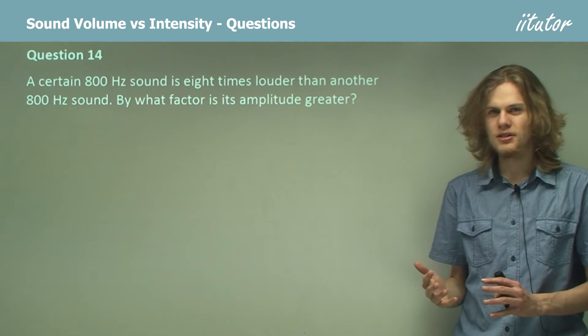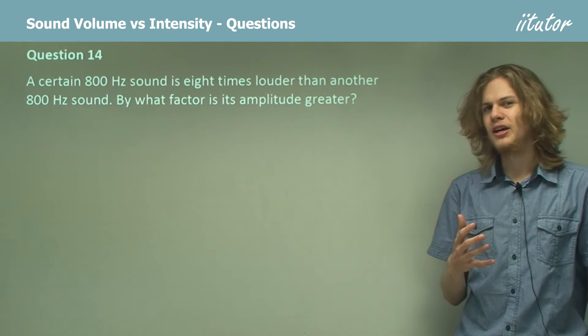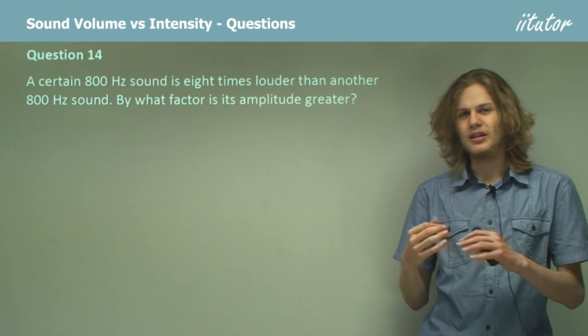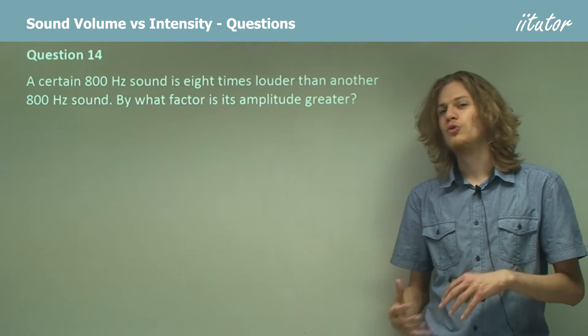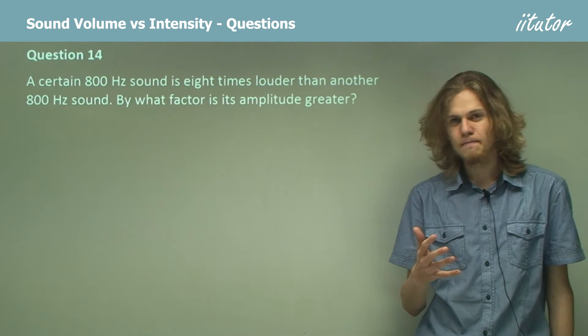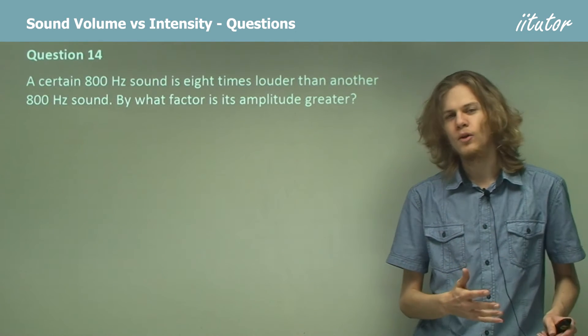Now, how does amplitude affect intensity? Well, we learned right back at the beginning that if we double the amplitude of the sound, then we quadruple the intensity. That is, the intensity is proportional to the square of the amplitude.